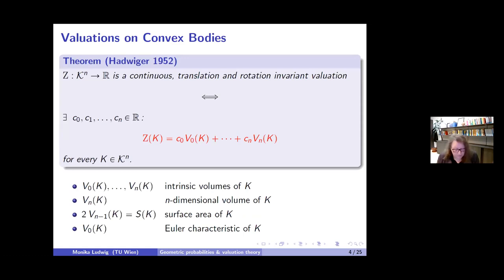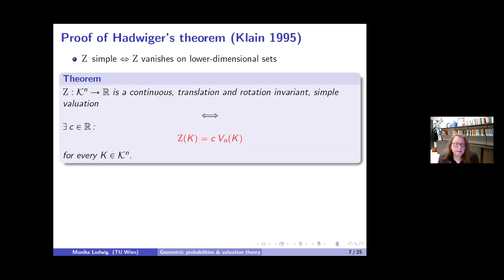Some words on the proof of this result: Hadwiger gave a proof in the 1950s, and more recently Klain gave a proof in 1995. I am not presenting the full proof, but just the reduction used. If we call a function on the space of convex bodies simple if it vanishes on lower dimensional sets, then Hadwiger's theorem can be reduced to the following aside: if Z is a continuous, translation and rotation invariant, and simple valuation, then it is just a multiple of the volume. This looks very similar to a characterization of Haar measure.